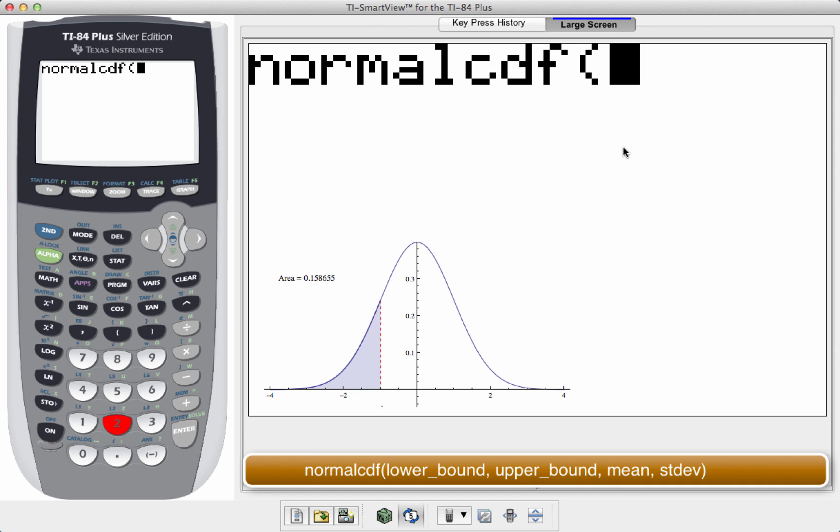First, I start with a lower bound. Because I want to test the probability being less than negative one, I'm going to choose an absolutely ridiculously large negative number like negative 9,999.